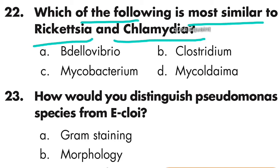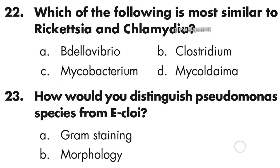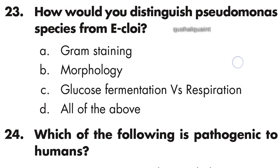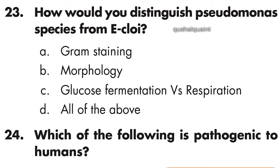Question 22: Which of the following is most similar to Rickettsia and Chlamydia? The answer is Mycobacterium — option C is correct.